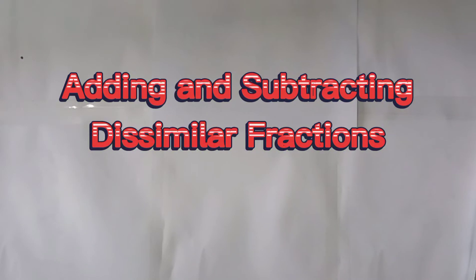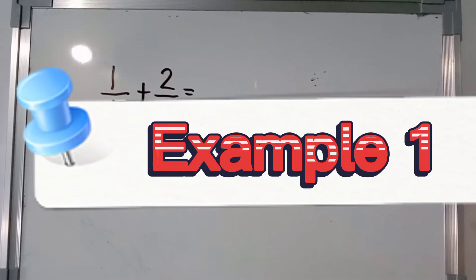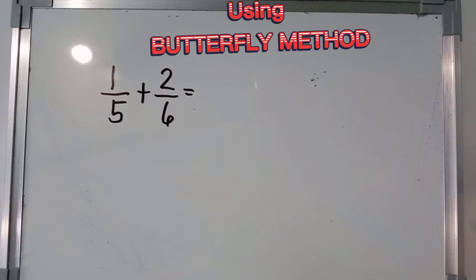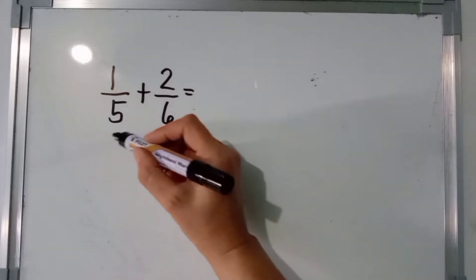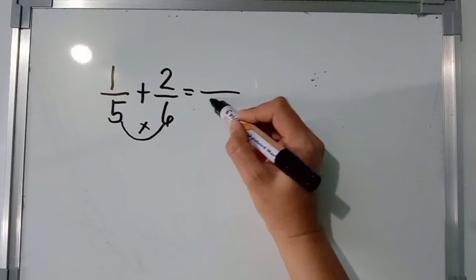One way of adding and subtracting dissimilar fractions is by using the butterfly method. Let's have some examples. First example: 1 fifths plus 2 sixths, or 1 over 5 plus 2 over 6. Using the butterfly method, ang una nating gagawin, we are going to multiply the denominators, which is 5 and 6. So, 5 times 6, the answer is 30.